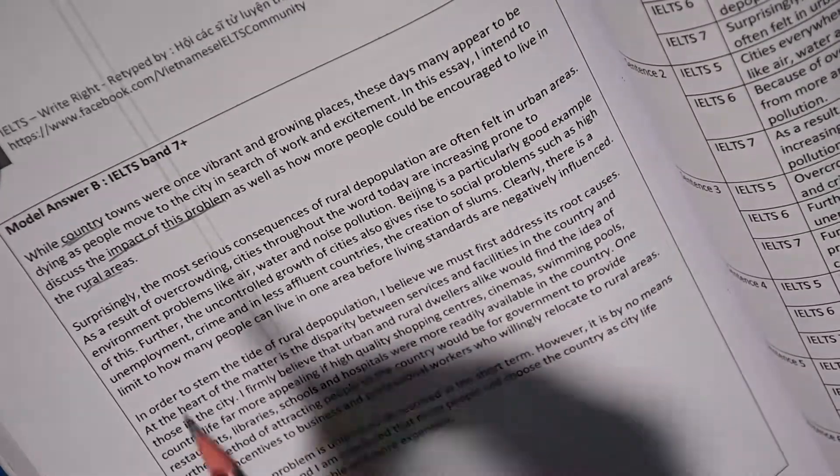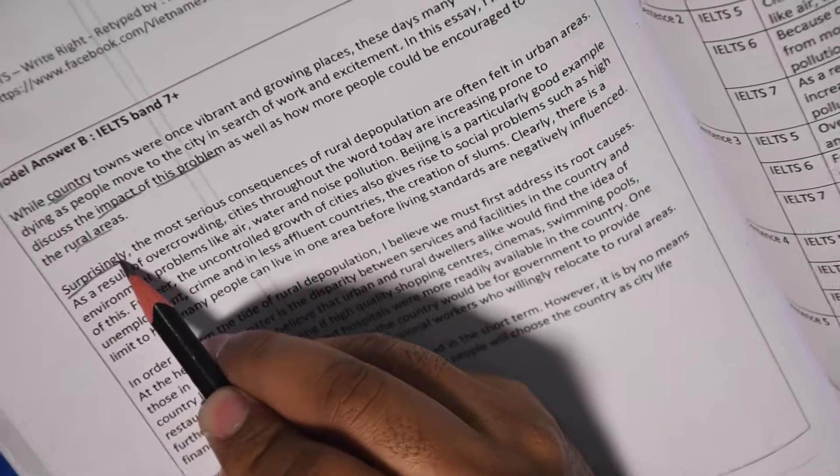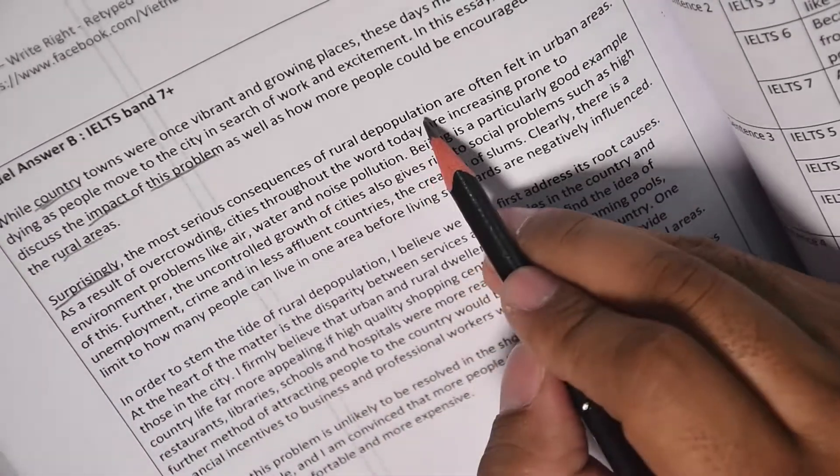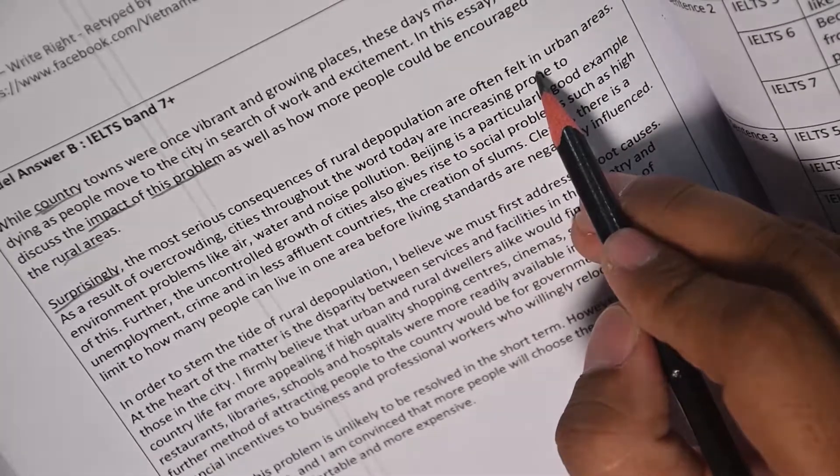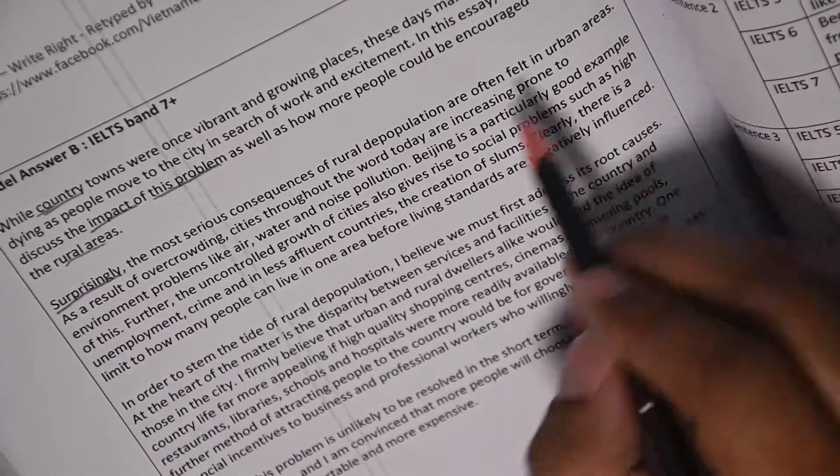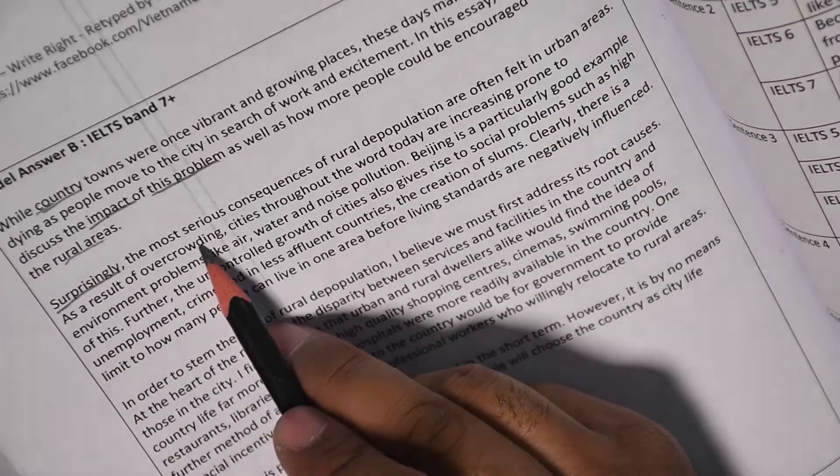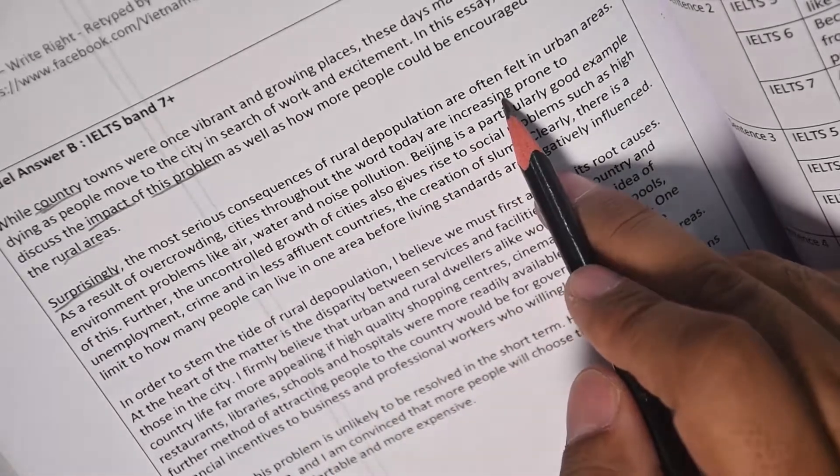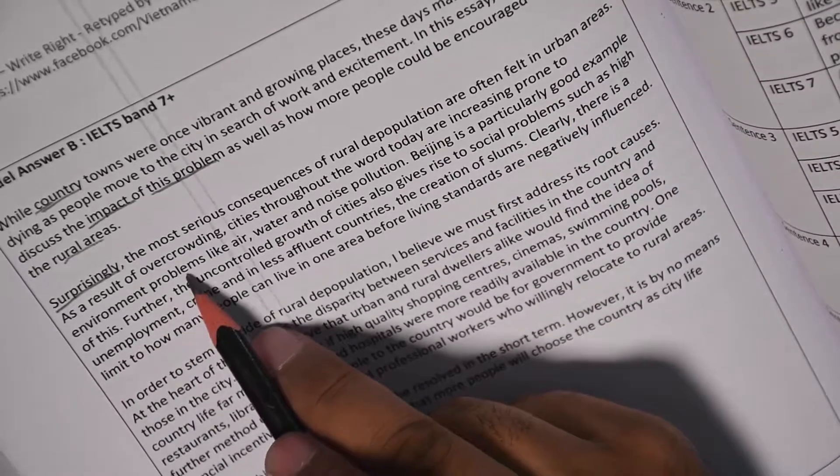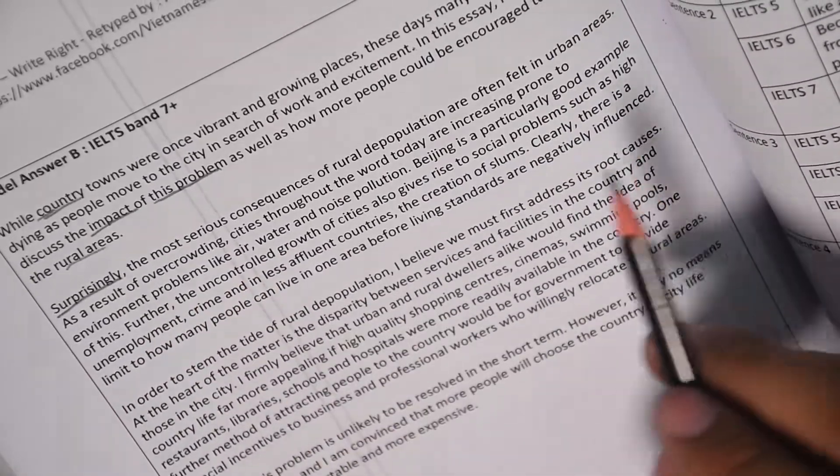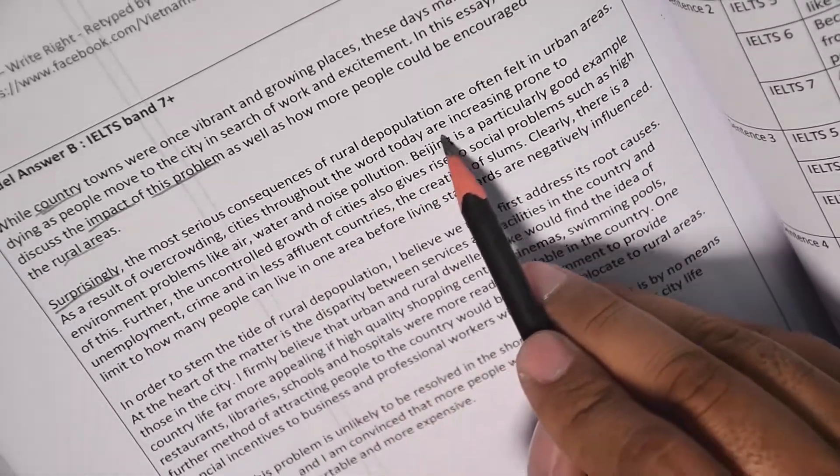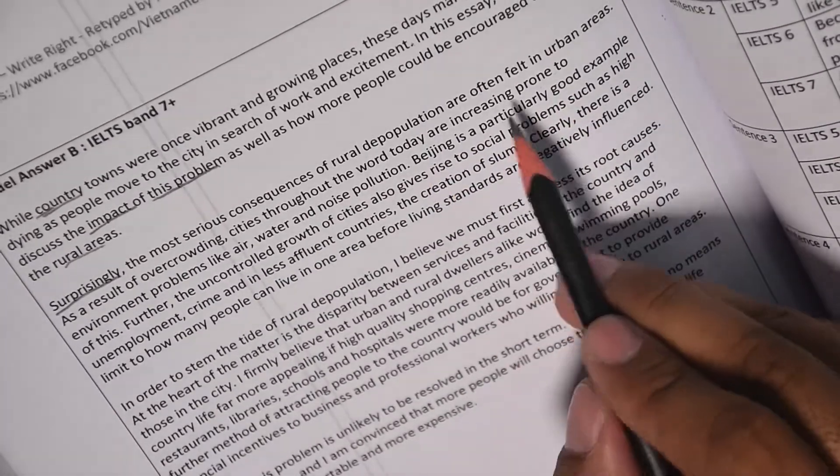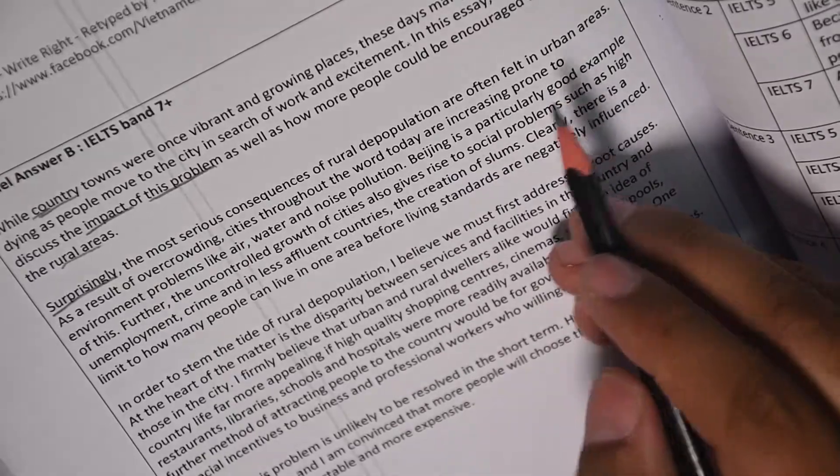Now see, it starts with a strong adverb. Surprisingly, the most serious consequences of rural depopulation are often felt in urban areas. As a result of overcrowding, cities throughout the world today are increasingly prone to environment problems like air, water and noise pollution. There is a mistake here, it should be increasingly prone.